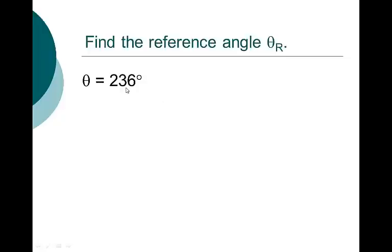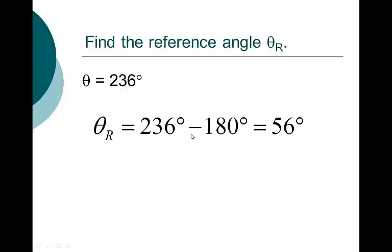How about 236 degrees? That's in quadrant 3. So we take 236 degrees minus 180 degrees and we get 56 degrees. If I know the sine, cosine, and tangent of 56 degrees, then I know the sine, cosine, and tangent of 236 — we can play with the positive negatives later.